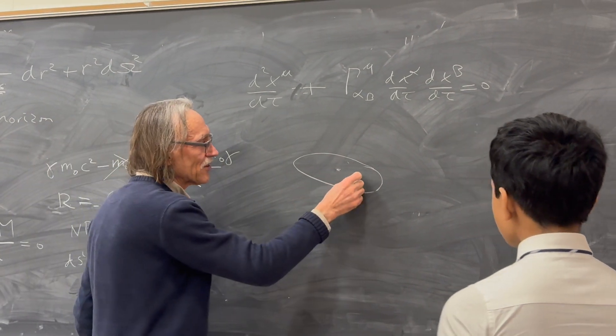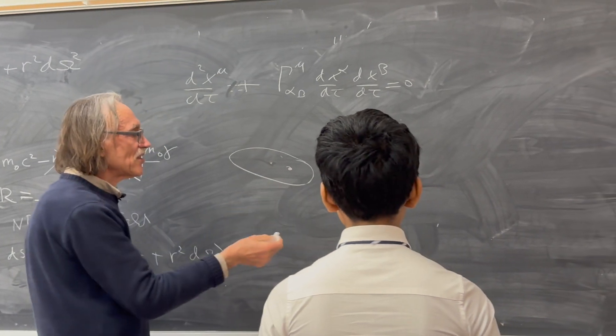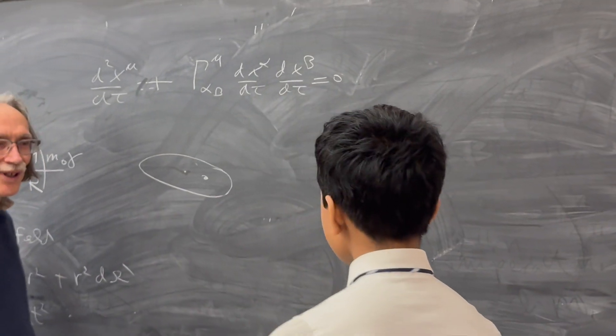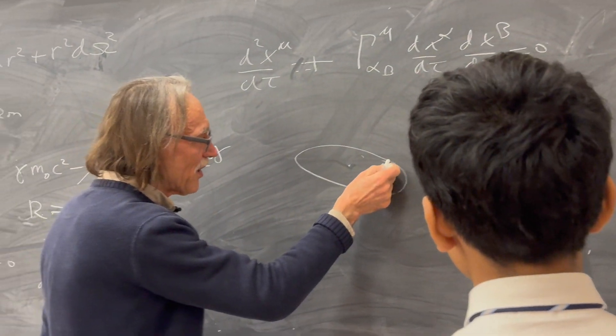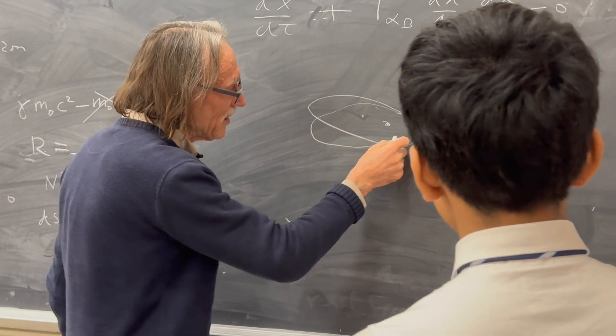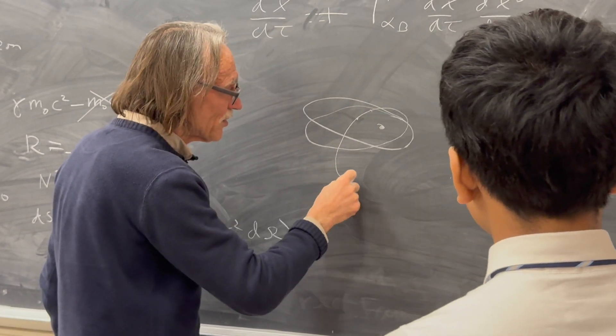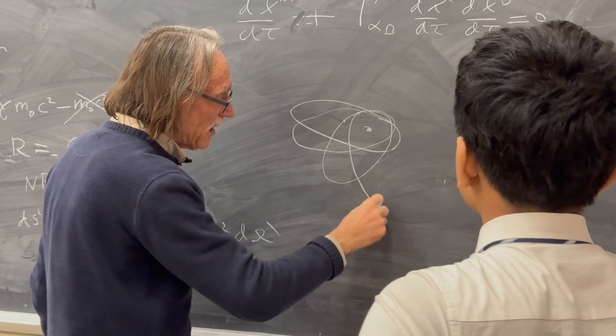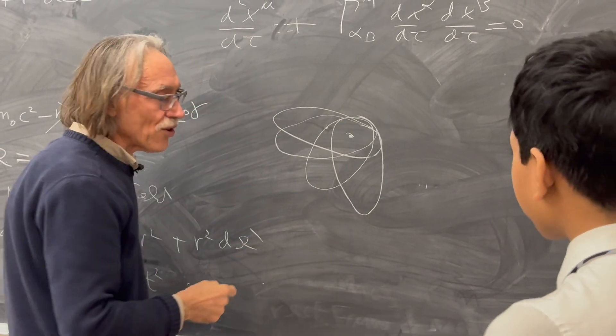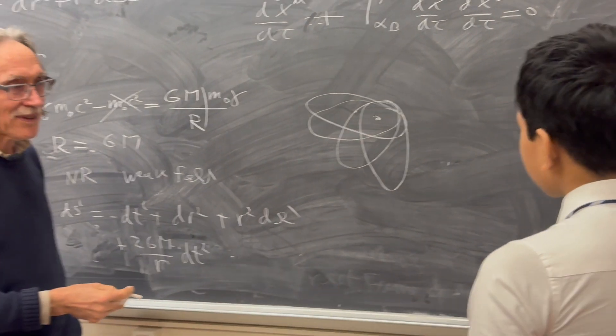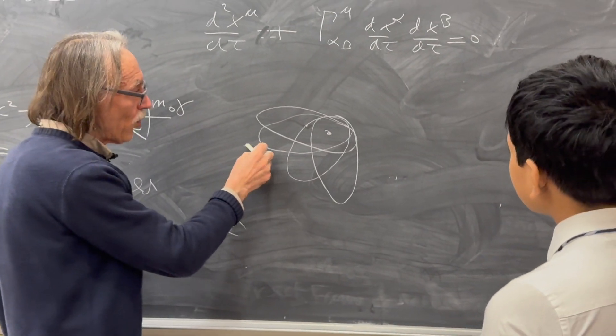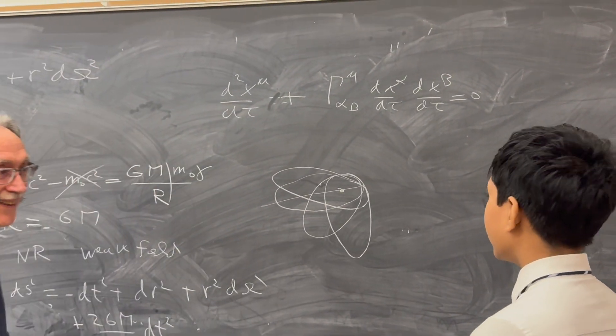And if you do that for a planet around the sun goes according to an ellipse. So here's the sun, but in general relativity is no longer an ellipse. It shifts a little bit each round. So it does like that. And this is called the perihelion shift. So the long axis actually is rotating.